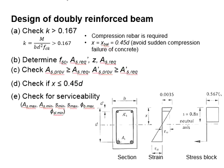This slide outlines the design steps for doubly reinforced beam. First, you need to compute the K number and check if it is more than 0.167. When it is more than 0.167, the compression bar is required. And it is by default that the neutral axis position is within 0.45D, so that it is to avoid sudden compression failure of the concrete.